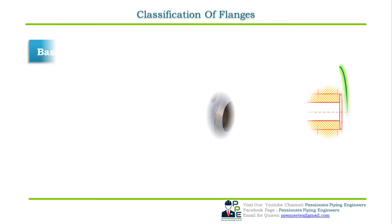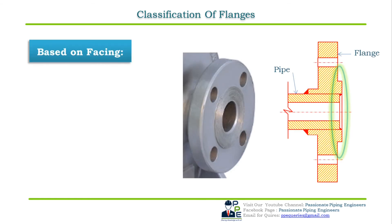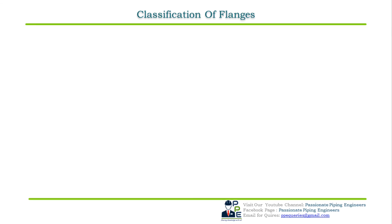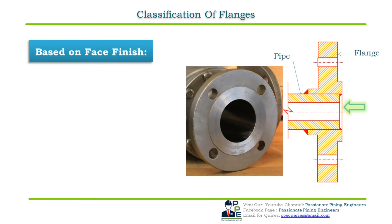Based on facing of the flange — meaning how the face that will host the gasket is designed — the types are: raised face flange, flat face flange, ring type joint (RTJ), male and female, and tongue and groove.